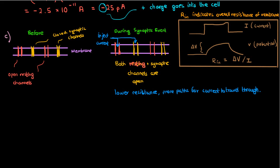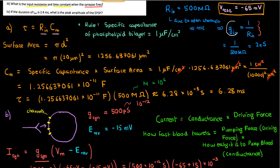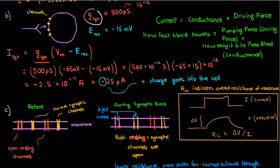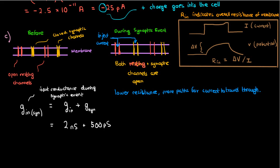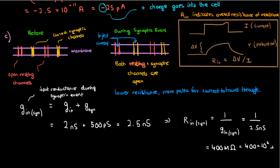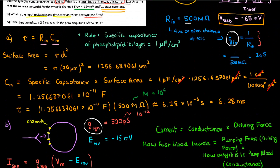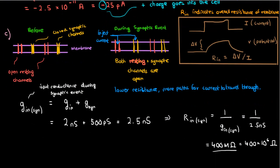You can find the new input conductance when the synaptic channels are open by taking the conductance of the resting channels and adding it to the conductance of the synaptic channels — there are more channels available, so the conductances add up. I've denoted this as G in sin to indicate the input conductance during the synaptic event. This gives a conductance of 2.5 nanosiemens, and the input resistance during the synaptic event is 1 divided by that, which is 400 megaohms — smaller than the original 500 megaohms, which makes sense.